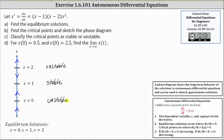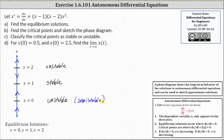However, if one of the two arrows does point toward the critical point, it can also be classified as semi-stable. The critical point at x equals zero can also be labeled semi-stable. Notice that's not true for the unstable critical point at x equals two.